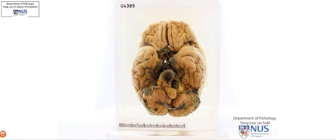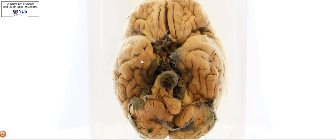Hello, here we can see the specimen of a brain. What we're looking at on this surface is the inferior view of the brain, with the temporal lobes here and the cerebellar hemispheres. This would be the medulla, and this is the pons.